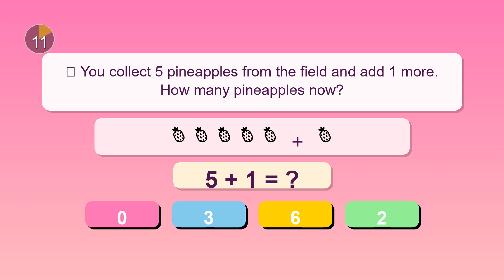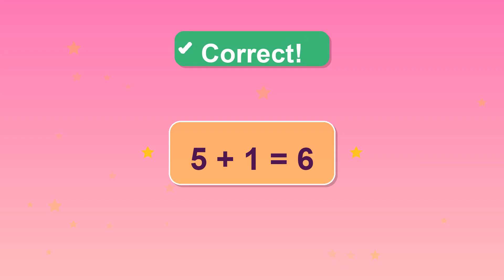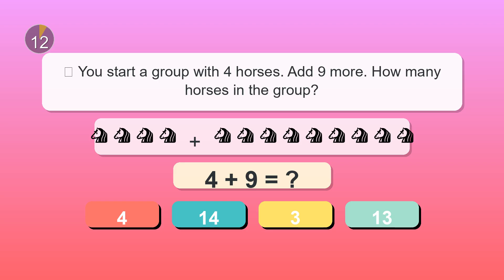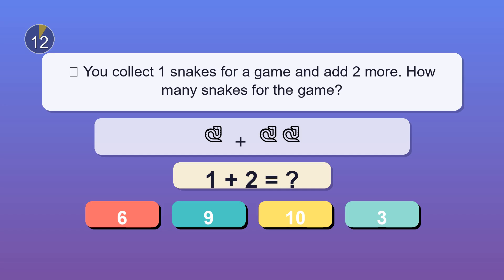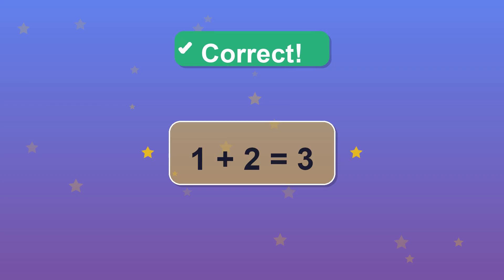You collect five pineapples from the field and add one more. How many pineapples now? Yes. Six. You start a group with four horses. Add nine more. How many horses in the group? 13. Amazing. You collect one snake for a game and add two more. How many snakes for the game? 3. You got it.